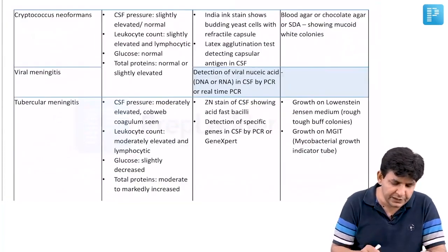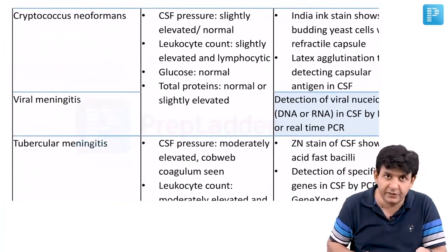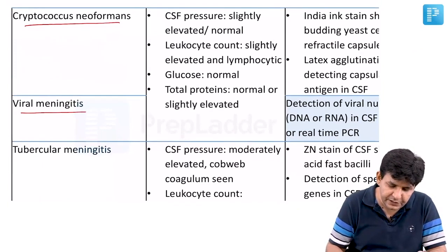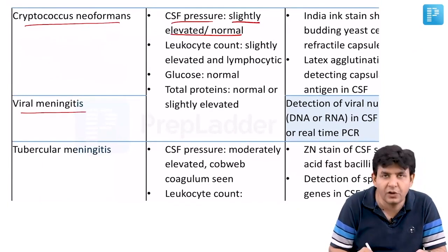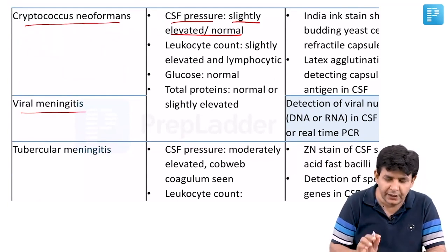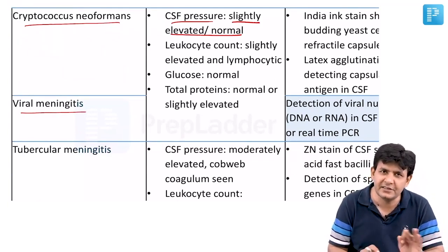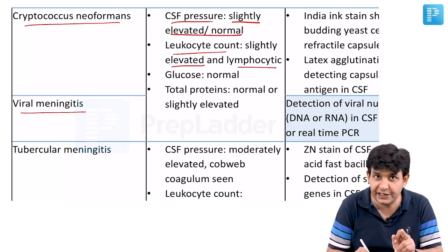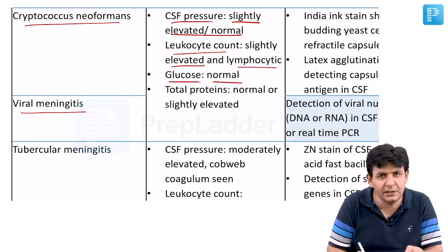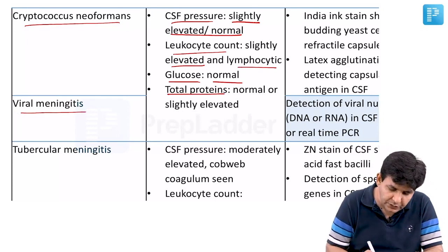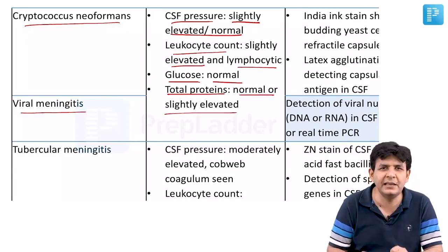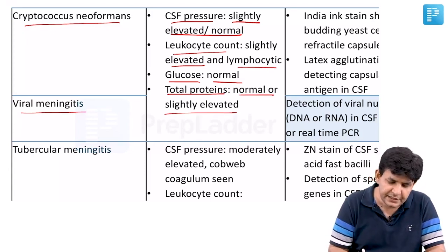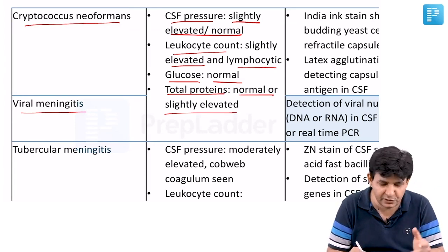In fungal meningitis with Cryptococcus neoformans and viral meningitis, the CSF pressure is slightly elevated or normal. Leukocyte count is slightly elevated and predominantly lymphocytic in both. Glucose is normal as these organisms don't consume it, and total proteins are normal or slightly elevated.